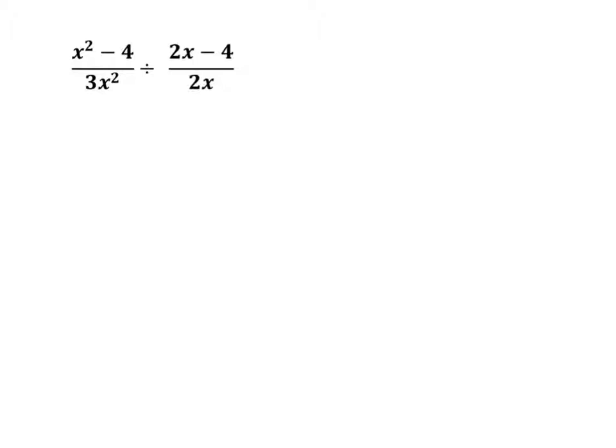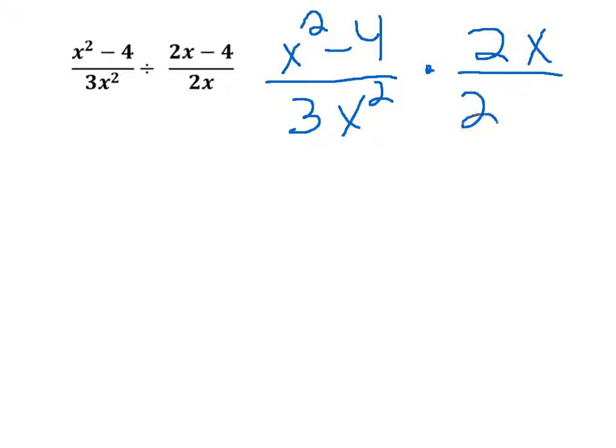First we can change it so that we are multiplying by the reciprocal instead of dividing. So it would be times 2x over 2x minus 4. We are just swapping those.